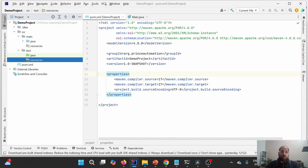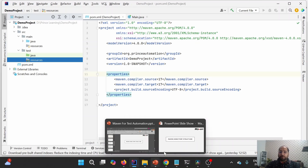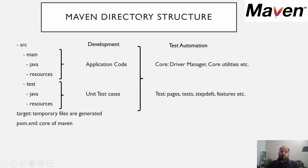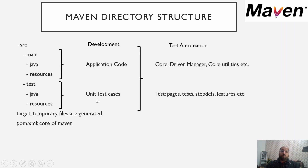Now both structures are the same. Let us understand their purpose step by step. As Maven is utilized by developers as well as testers, let us understand it from the development perspective first. The folder structure is: SRC main Java, SRC main resources, SRC test Java, and SRC test resources. Developers write application code in SRC main Java, and whatever resources or additional files are needed by that source code are defined under the resources section. The test section is used to write unit test cases, and the resources section under test is used for configuration files needed by those unit test cases.